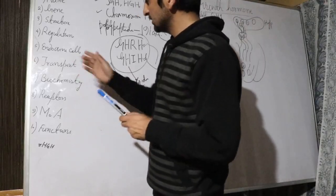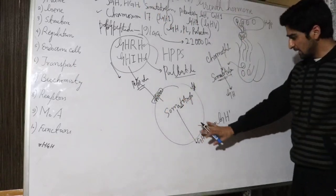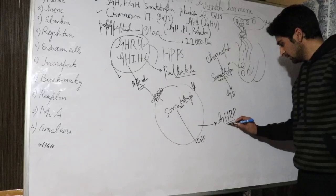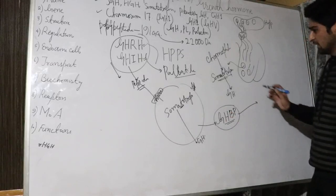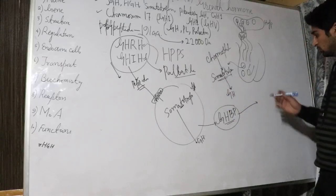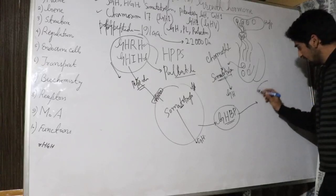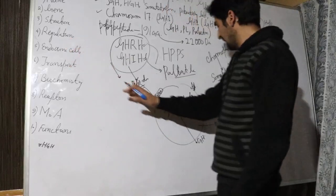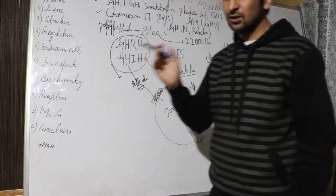When somatotropes release growth hormone into the blood, it binds with the growth hormone binding protein, which carries it in the blood to its target cells. Although all cells of the body are target cells of growth hormone, the maximum number of target cells lie in the liver, especially.